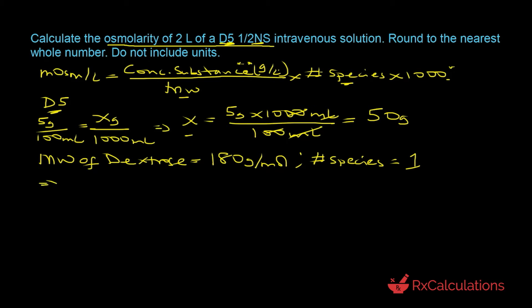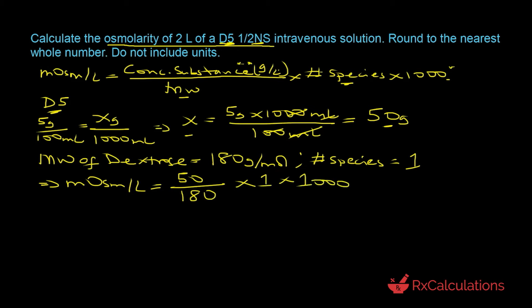Substituting into the equation: osmolarity equals 50 divided by 180, times 1, times 1000, which equals 277.8 milliosmoles per liter.